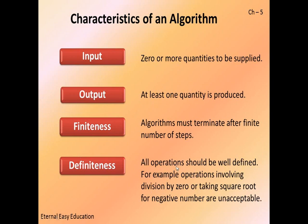Definiteness: all operations should be well defined. For example, operations involving division by zero or taking the square root of negative numbers are unacceptable. If we have a problem at runtime — for instance, if you have a student's age field — you should have a minimum age of 18 years. So you check the criteria in that area.